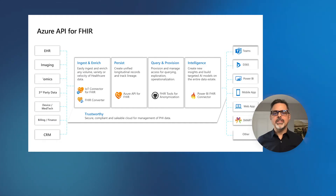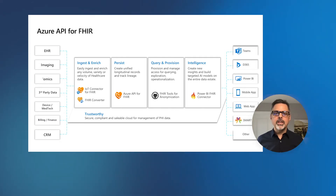All of this is enabled by a set of capabilities we've built in the Azure cloud. At the center is the Azure API for FHIR, which is an implementation of the FHIR specification. The Azure API for FHIR implements the FHIR specification without opinion — we implement the specification as it's written and stay true to it. If we feel that changes need to be made to the specification, rather than deviating from it in our implementation, we work with the HL7 FHIR community to see those changes through.